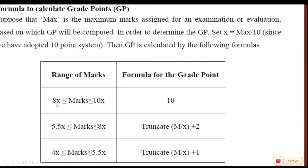x is 10, so if I put x equal to 10 it becomes 80, and if I put x equal to 10 here it becomes 10 into 10, which is 100. So between 80 to 100 the grade point is 10. Between 55 to 80, the formula says truncate m divided by x, then add 2. m is the marks scored. For example, a student who scored 60 marks: 60 divided by 10 is 6, plus 2 equals 8. So a student scoring 60 marks gets a grade point of 8. For the next interval 40 to 55, if the student scored 50: 50 divided by 10 is 5, plus 1 equals 6, so grade point becomes 6.